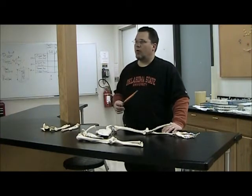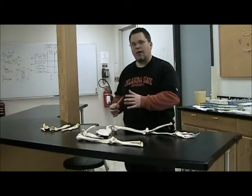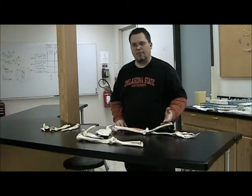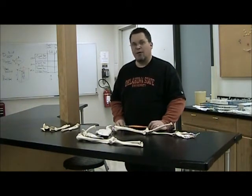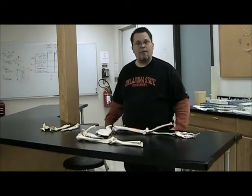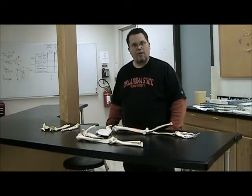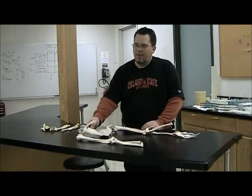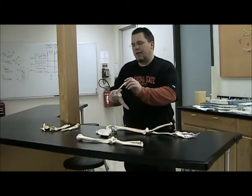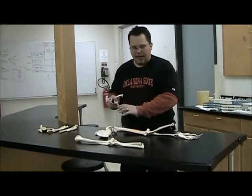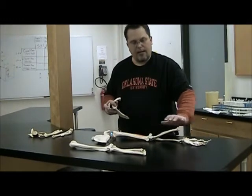We're going to now look at the appendicular skeleton, the upper extremity. Just like the lower extremity, we have girdles — like a pelvic girdle with a lower limb. Well here, we have what's known as a pectoral girdle and an upper limb.